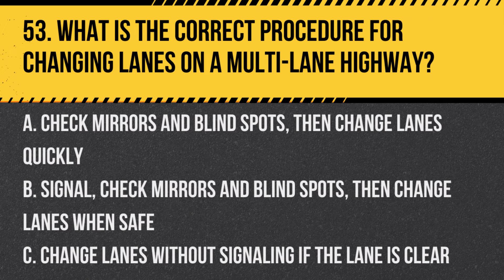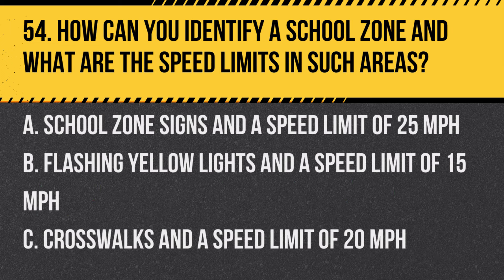Question 53: What is the correct procedure for changing lanes on a multi-lane highway? A. Check mirrors and blind spots, then change lanes quickly. B. Signal, check mirrors and blind spots, then change lanes when safe. C. Change lanes without signaling if the lane is clear. Answer: B. Signal, check mirrors and blind spots, then change lanes when safe. Always signal, check your mirrors and blind spots, and then change lanes when it's safe to do so.